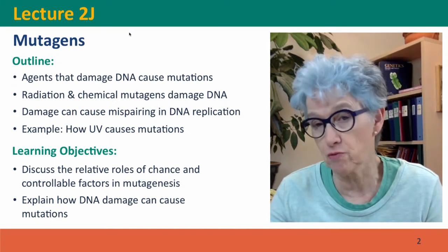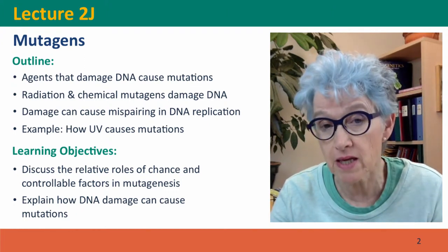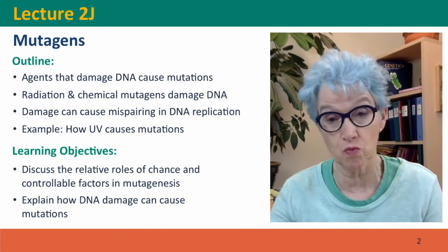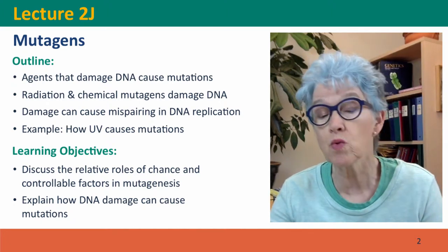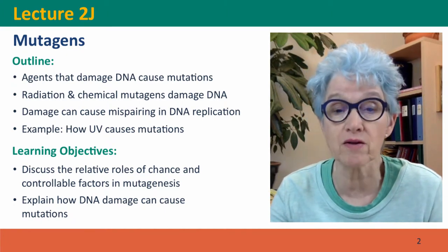These chemicals and radiation, that's what they mostly are, usually act by damaging DNA and the damage then causes DNA polymerase to make mistakes that it wouldn't otherwise make. We'll work in detail through one example, that of ultraviolet radiation.